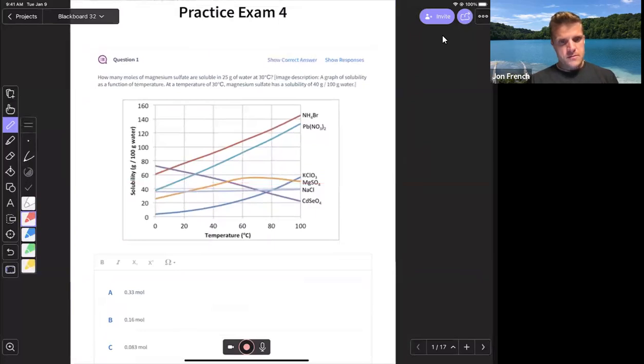So to answer this question, we've got 30 degrees Celsius. At 30 degrees Celsius with magnesium sulfate, we're right about there. Work our way across. That means I can hold 40 grams of magnesium sulfate in 100 grams of water. We only have 25 grams of water, so we have one-fourth the amount of water. That means I'm going to have one-fourth the amount of magnesium sulfate. So one-fourth of 40 grams is 10 grams of magnesium sulfate.